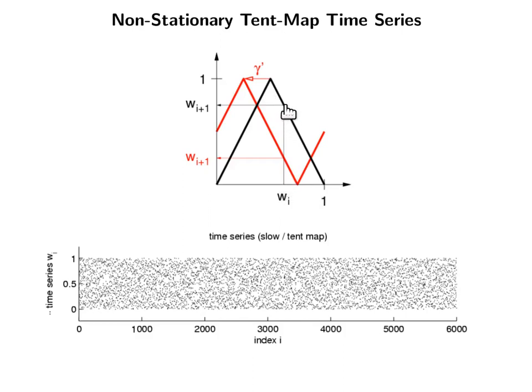Then you look at the function value that gives you the next wi plus 1 and then you feed this value back, let's say it's here, that gives you wi plus 2 and so on. You feed this through the same function over and over again.